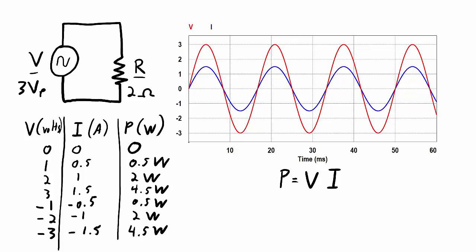So at every instant in time, maybe a better way of writing this out is p(t) equals v(t) times i(t). So this is saying that as voltage and current vary over time, so does the power. And what I can do at every instant in time is take the value of the voltage and the value of the current, multiply them together, and I get power.